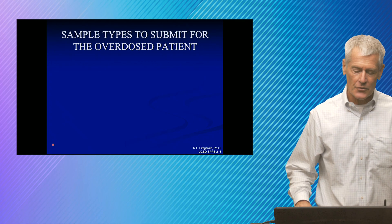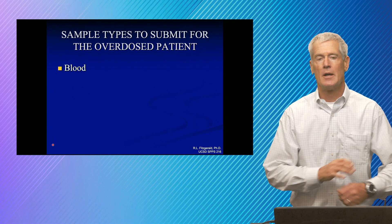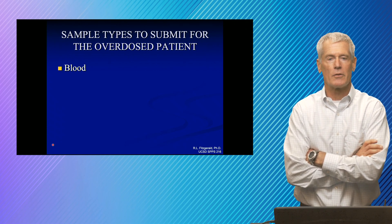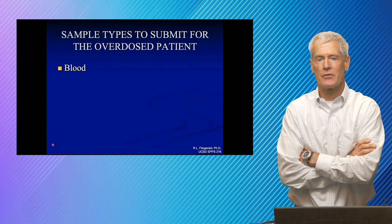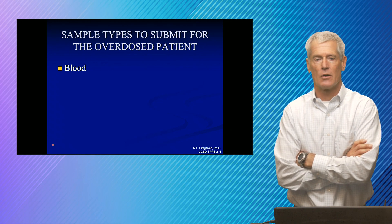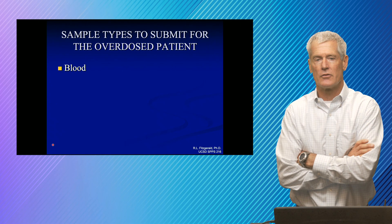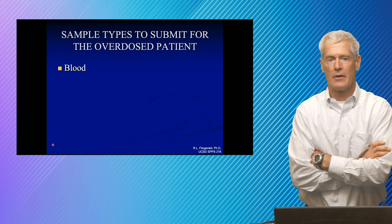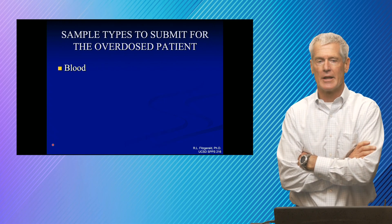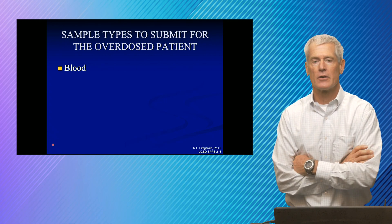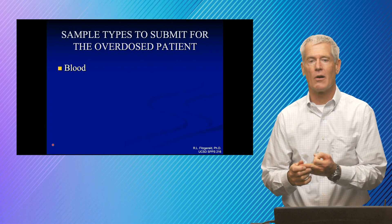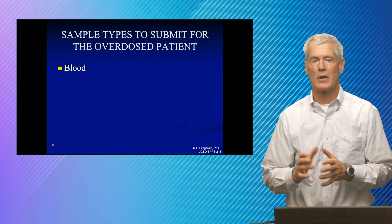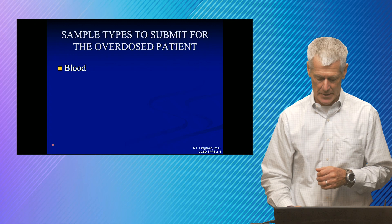Sample types to submit for an overdose patient: blood samples — and by blood I mean blood, plasma, serum — we use those for things where we can correlate concentrations and effects. The central tenet is that concentrations in circulation are in equilibrium with the receptors where they're having action. If there's a quantitative relationship, then we want a blood sample. Things like acetaminophen, salicylates, alcohol, iron — those are good examples where you want a blood sample because we can correlate effects to measurable concentrations.